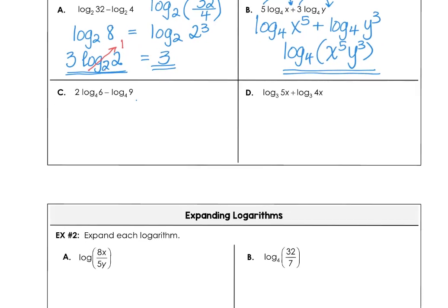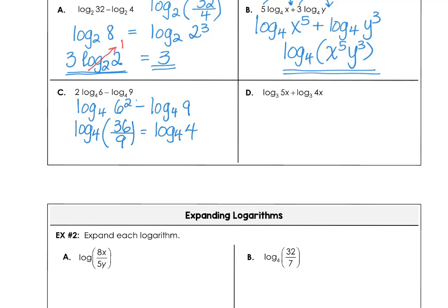In part c, we're doing pretty much the same thing. Log base 4 of 6 to the second power: 6 squared is 36, minus log base 4 of 9. So we divide: log base 4 of 36 divided by 9, which is log base 4 of 4. You may recognize that log base 4 of 4 simplifies to 1. But if you didn't see that, you could rewrite 4 as 2 squared, bring the 2 in front: 2 times log base 4 of 2. Either way, this simplifies to 1.